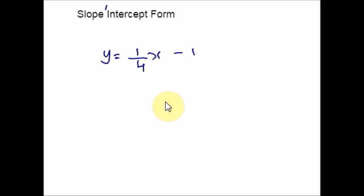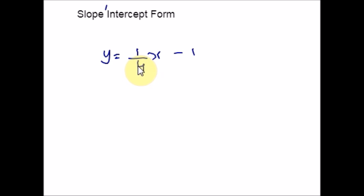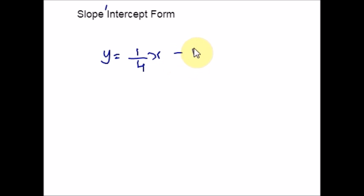Here is the next example. When an equation is in slope-intercept form, the slope is the number in front of x. So here the slope is 1 over 4. A line with a slope of 1 over 4 will go up 1 unit and over to the right 4 units. The y-intercept is the constant at the end — please pay close attention to the sign. This equation has a minus sign, so the y-intercept here is negative 1. This means the line crosses the y-axis at the point (0, -1). Please be careful with the signs given in the equation.